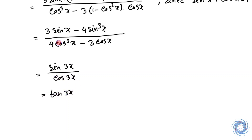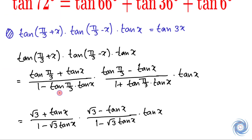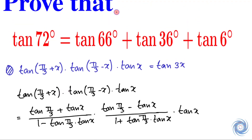Since sin 3x equals 3 sin x minus 4 sin cubed x, and cos 3x equals 4 cos cubed x minus 3 cos x, we have the following result, and ultimately we get tan 3x. Therefore we have proved this result. Now let us start from the right hand side.